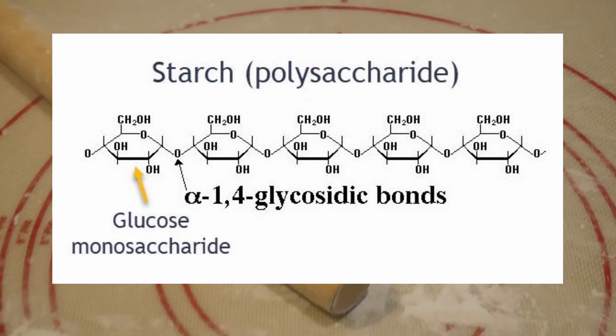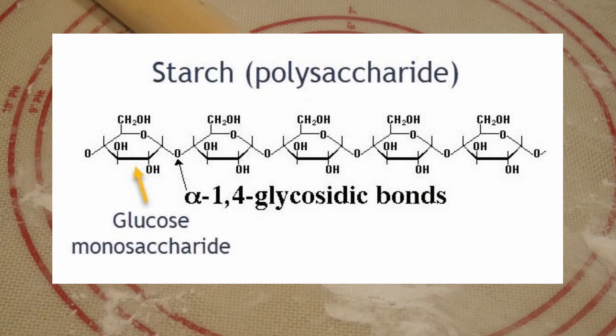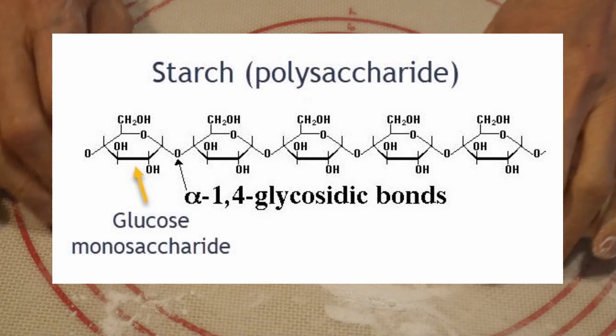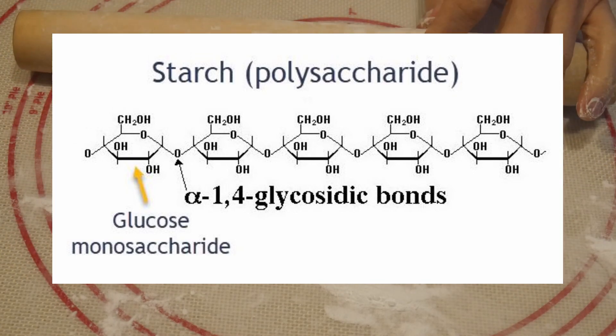A starch is a group of a chemical molecule known as polysaccharide. A starch is a polymer of individual glucose that are joined together.